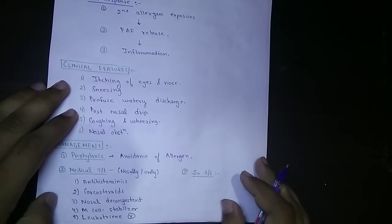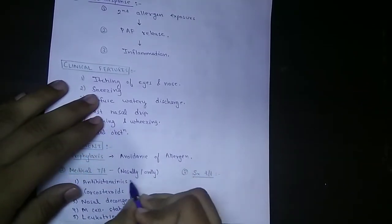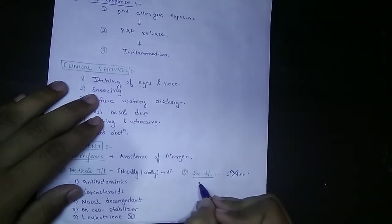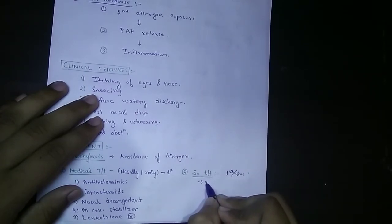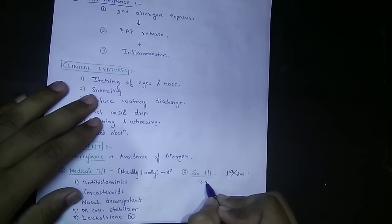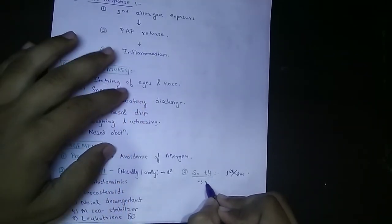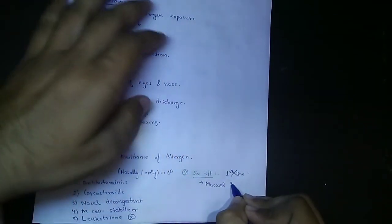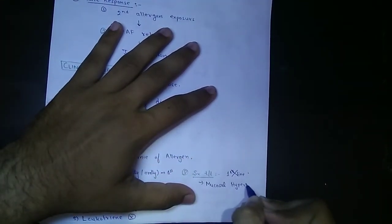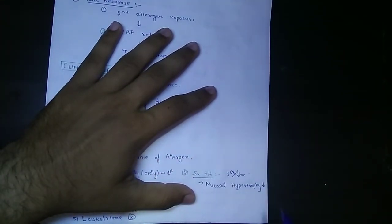Now coming to the surgical treatment. Medical treatment is the first line treatment; surgical treatment is not first line. The only surgery which can be done in allergic rhinitis is mucosal resection, which is done to prevent mucosal hypertrophy.